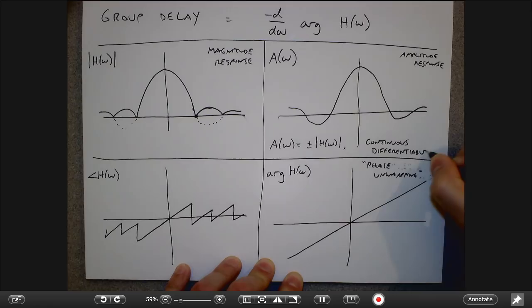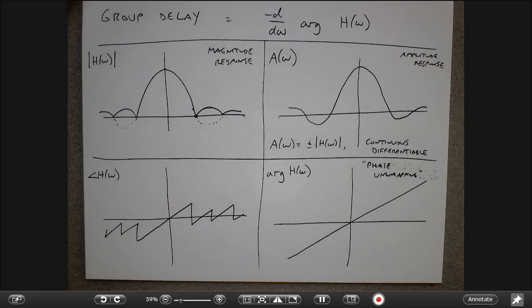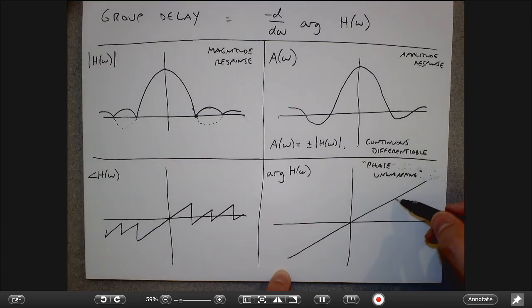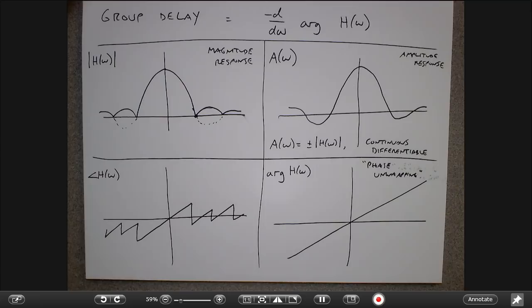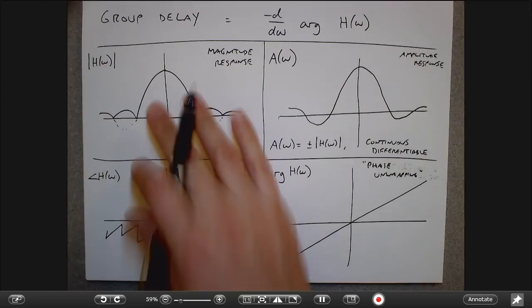Going back to phase: one measure of how good the phase is involves asking how close the unwrapped phase function is to being linear. If we take the derivative and get a constant, the phase is linear. So we can look at the group delay — if it's close to constant, we're close to linear phase; if not, we're probably not a linear phase function. In the next part, we'll focus on designing the amplitude response of a filter.